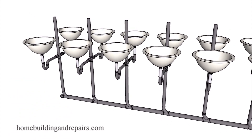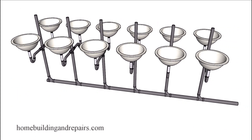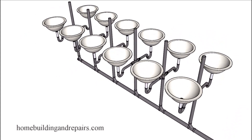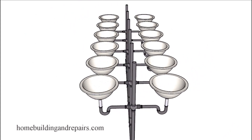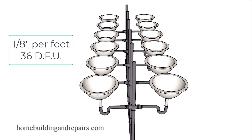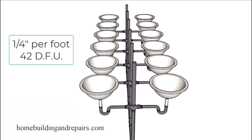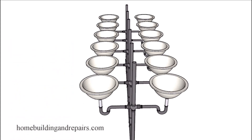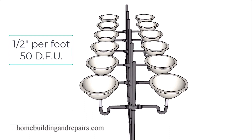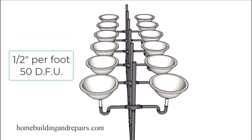I know this doesn't sound like that big of a deal, however these numbers increase a lot once we start increasing the diameter of our pipes. For example, a three inch pipe sloping an eighth of an inch per foot can have 36 fixture units. However, if it's sloping a quarter of an inch per foot it can have 42 units, and at a half inch per foot, 50 units.